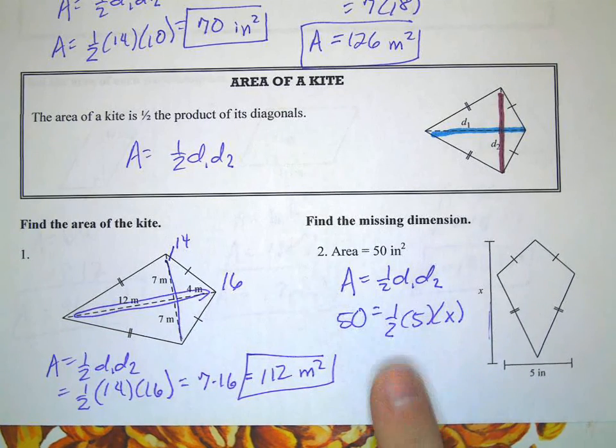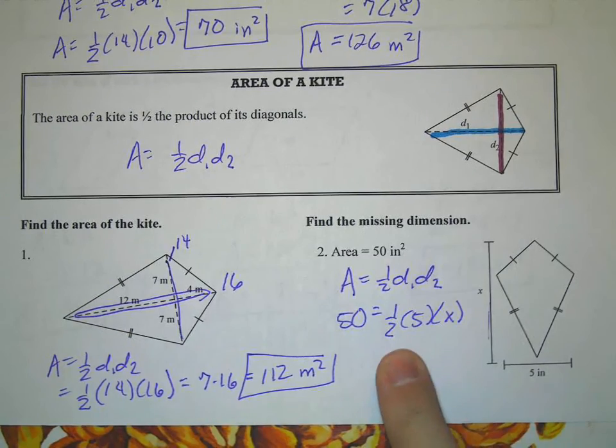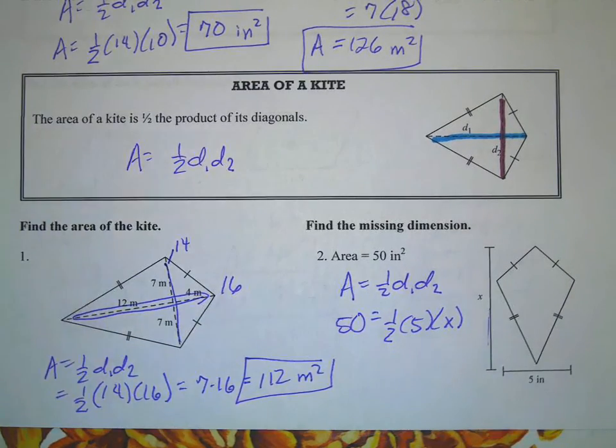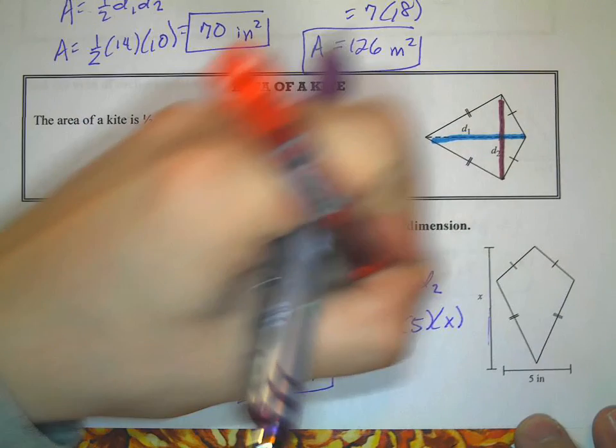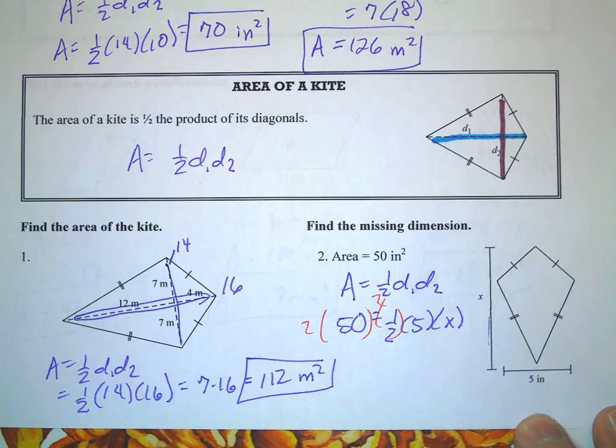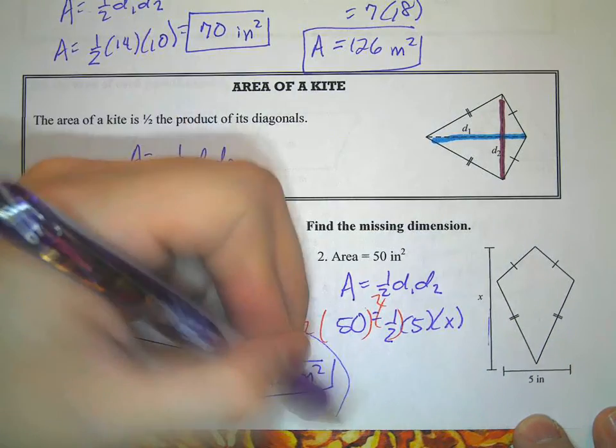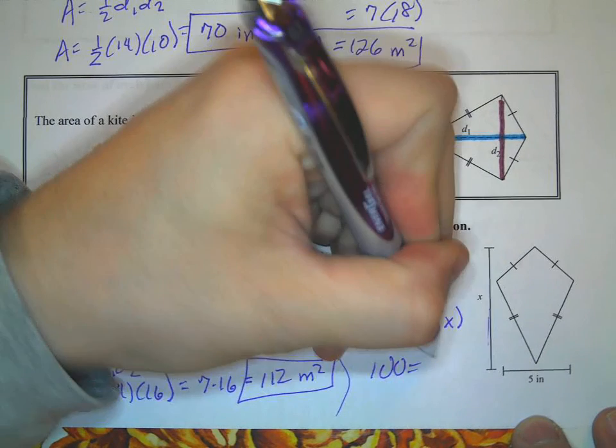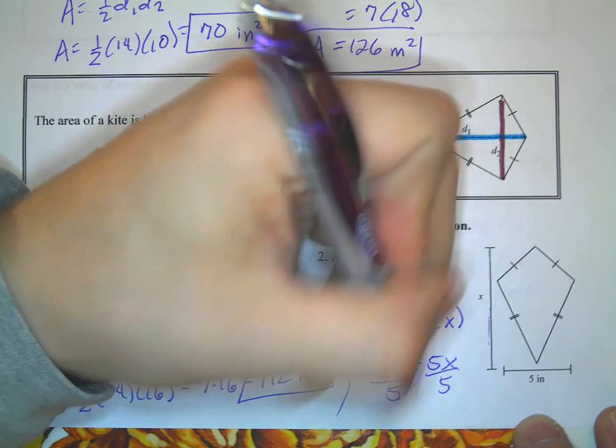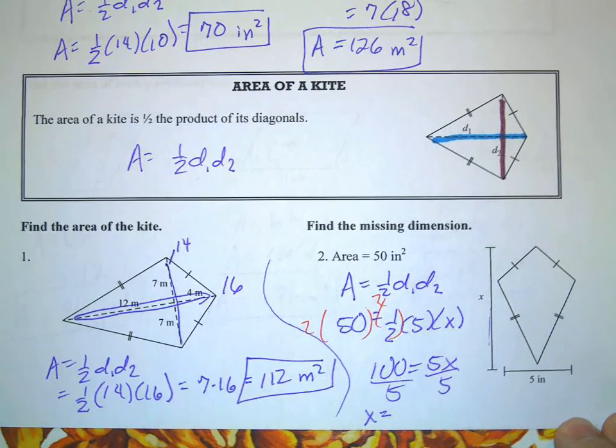Okay. I don't want this fraction here, so I'm going to multiply both sides by 2. 50 times 2 is 100, so I have 100 equals 5x. Divide both sides by 5, so the missing dimension is 20 inches.